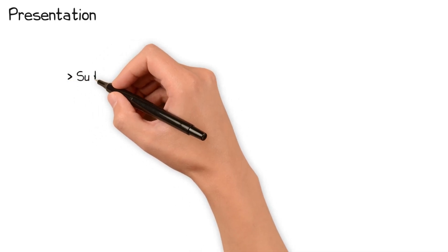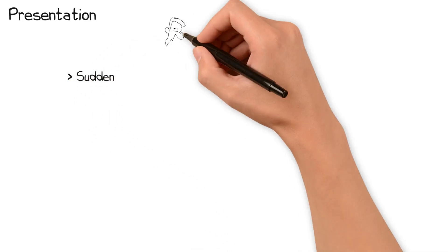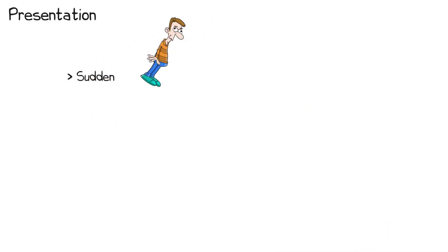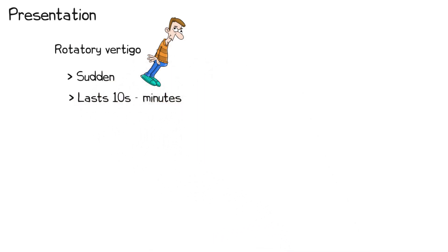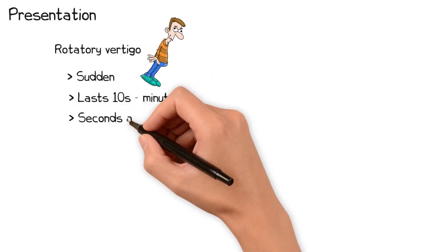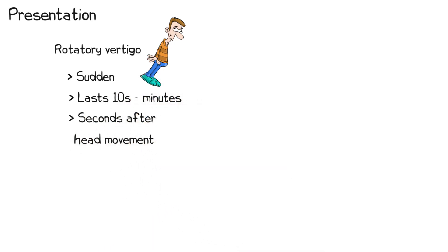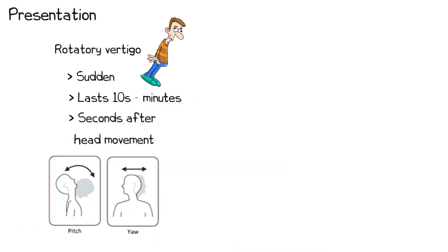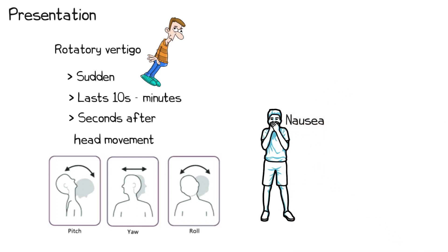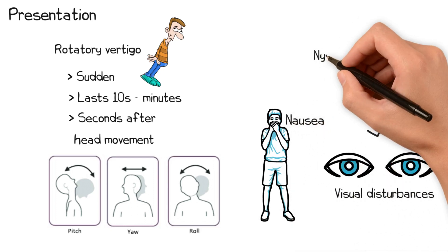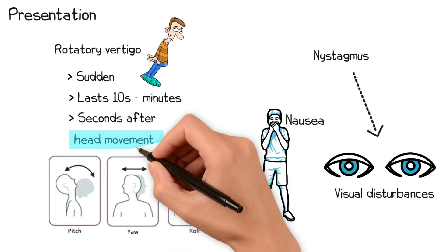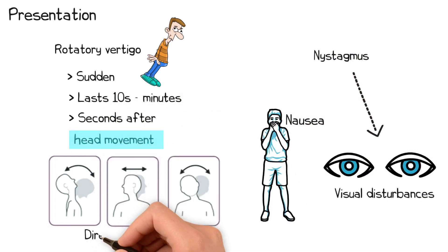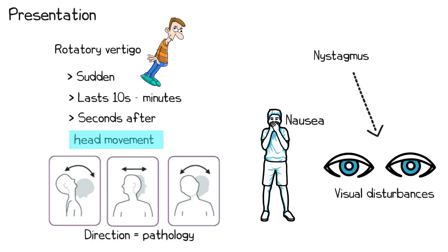Classically, patients with BPPV report sudden onset rotatory vertigo lasting 10 seconds to a few minutes, typically occurring a few seconds after specific head movements, for example looking up and down or rolling over in bed. This may be associated with nausea or visual disturbances due to the nystagmus. The direction of the head movement that precipitates the vertigo is an important clue as to the location of the pathology.